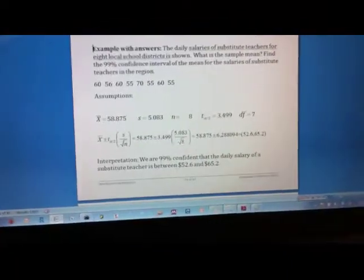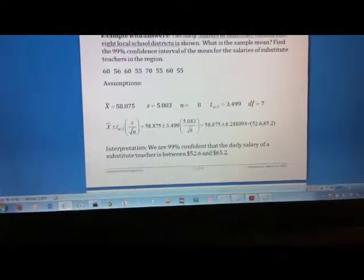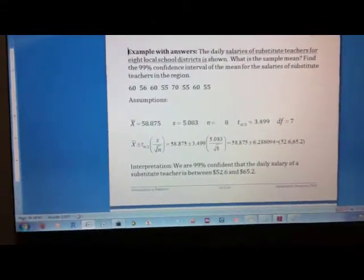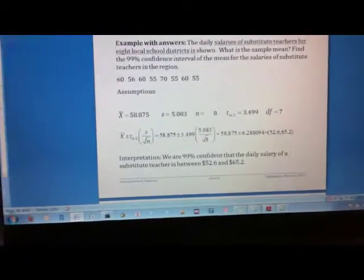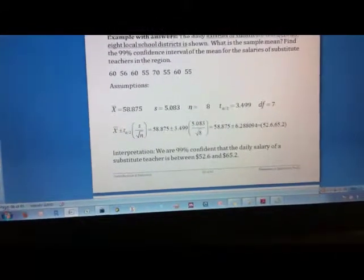We're going to learn to use our calculator to find a confidence interval when we do not know our population standard deviation, so sigma is not known. We are going to do that with our substitute teacher data so we can compare that to the answer that we got computed on slide 36.